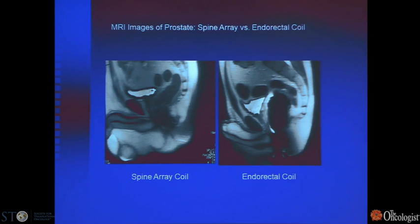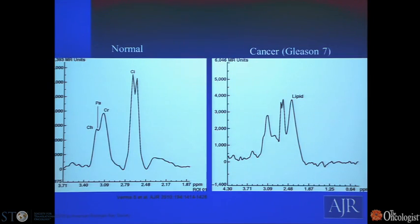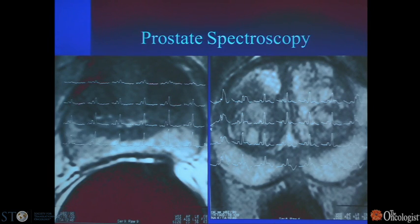Two images are shown: the left obtained using a spine array coil, and the right showing an endorectal coil placed into the rectum so the coils are in closer proximity to the prostate gland, allowing for improved image resolution. Both techniques can be used for prostate MR and MR spectroscopy. The lines overlying the two axial images of the prostate correspond to spectra obtained on a voxel-by-voxel basis.